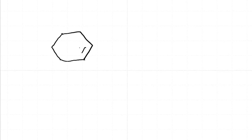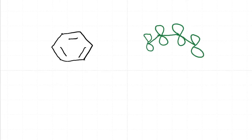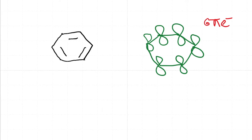We will be spending quite a bit of time on aromatic compounds in this course and therefore it is quite useful. Just to recap, benzene basically is 3 pi bonds in a hexane ring and the orbital picture is going to look something like this. Now let us look at the energy levels of benzene.